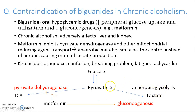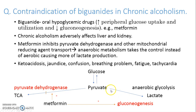This is known as anaerobic glycolysis. Now, what metformin does is that it inhibits the pyruvate dehydrogenase enzyme, and thus the utilization of pyruvate in the TCA cycle is inhibited. The only pathway which remains is the conversion of pyruvate to lactate. Because of the accumulation of lactate, there is a chance of lactic acidosis. This is the reason why we should not give biguanides in chronic alcoholism.